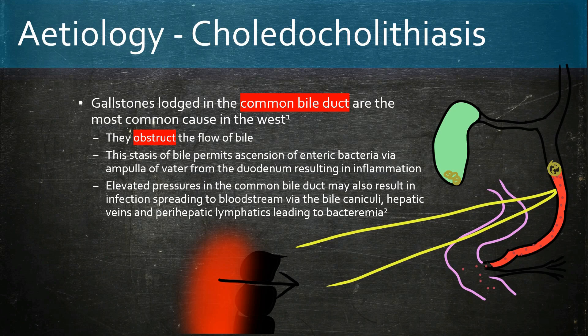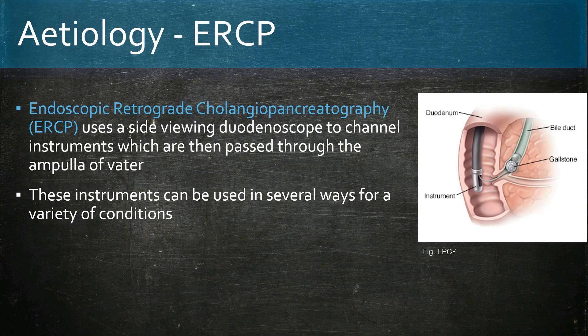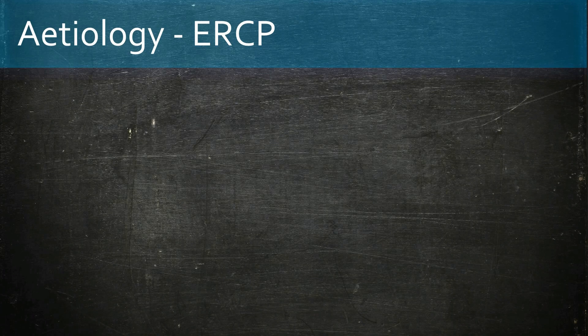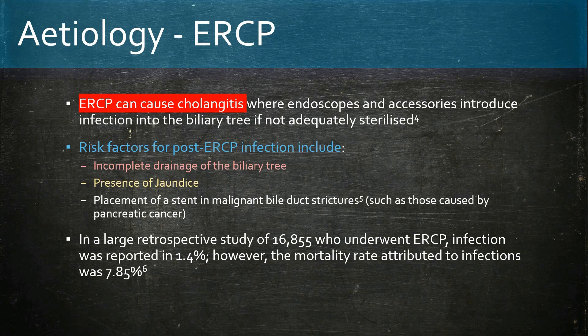Just as the presence of gallstones in the common bile duct results in unabated bacterial growth, ERCP procedures can also cause acute cholangitis by introducing bacteria to the biliary system. The risk for post-ERCP infection is increased, especially if there is incomplete drainage of the biliary tree. Drainage of the biliary tree is indicated in severe cholangitis. The presence of jaundice and placement of a stent in malignant bile strictures also pose as risk factors, though ERCP presents with a low overall risk of infection.